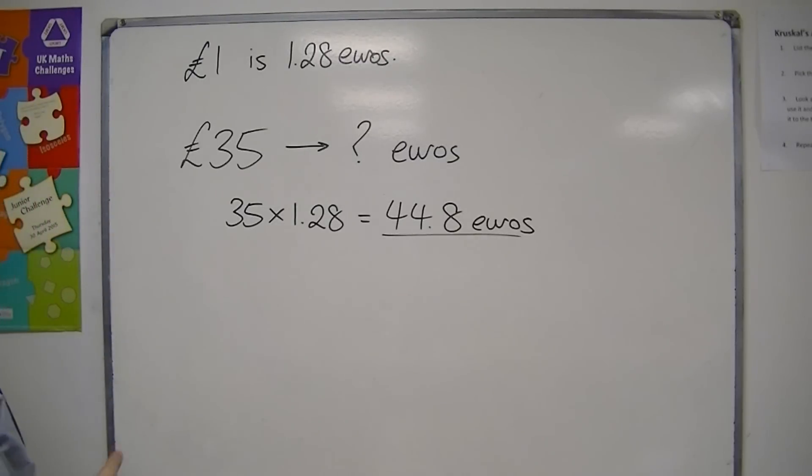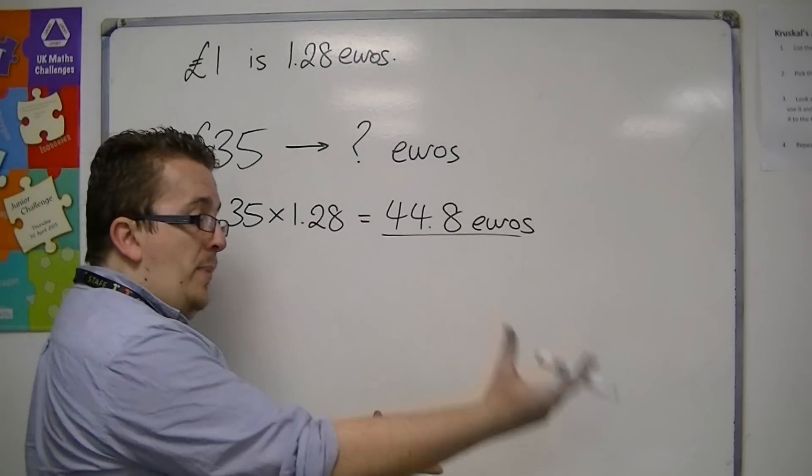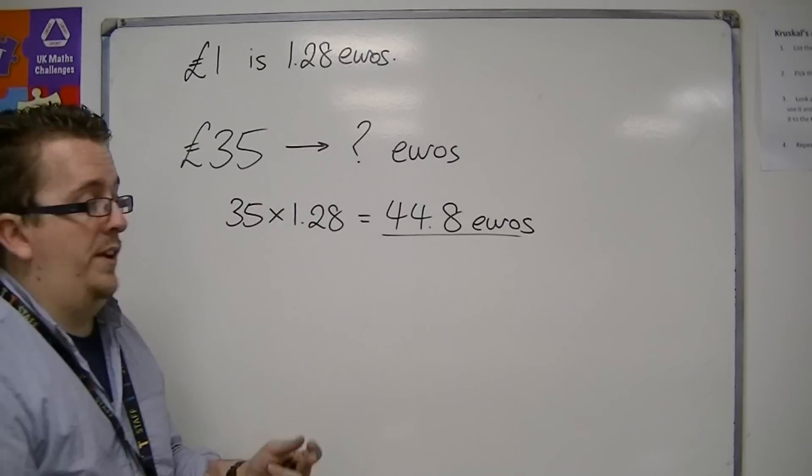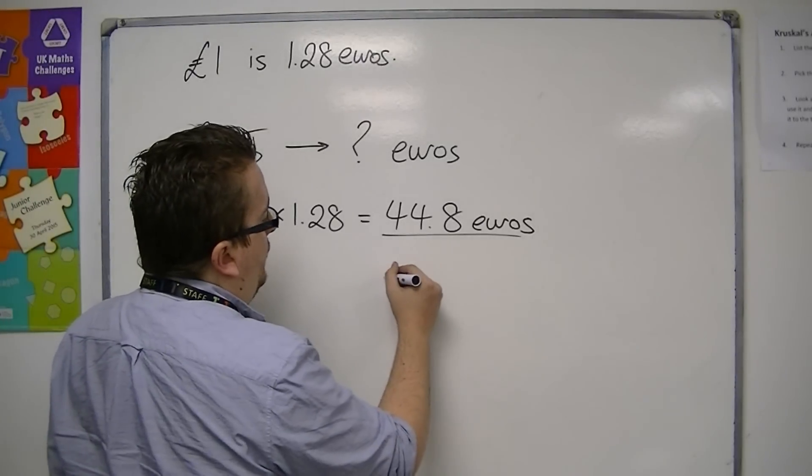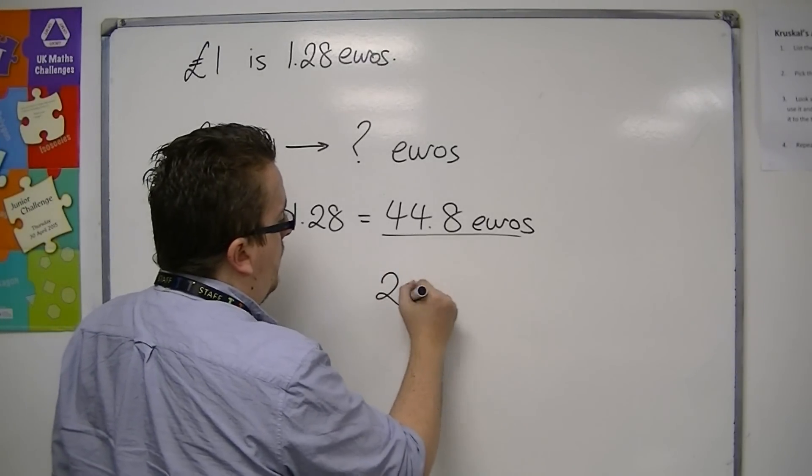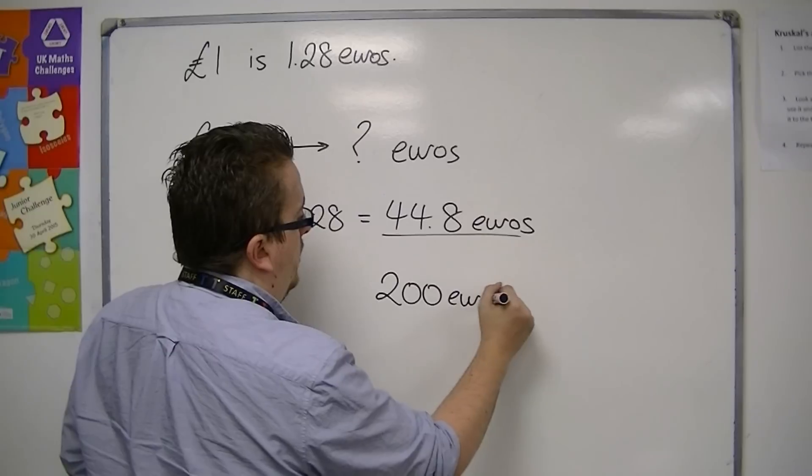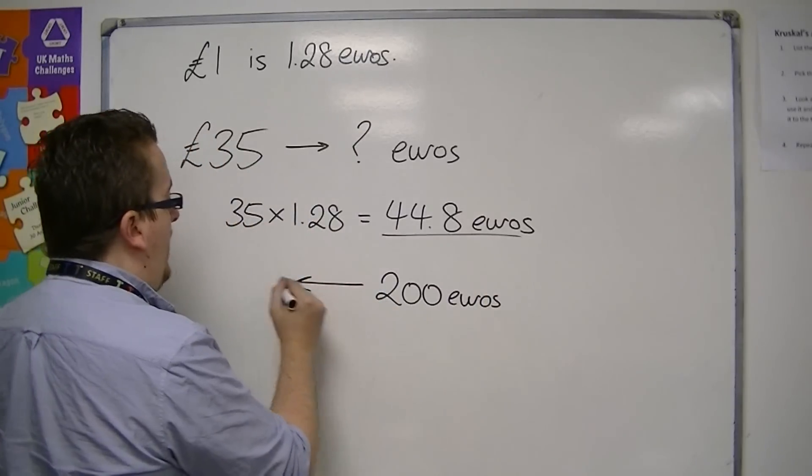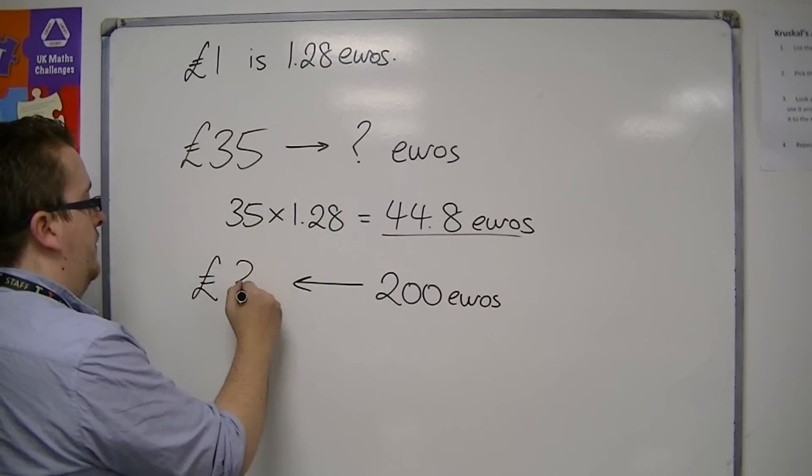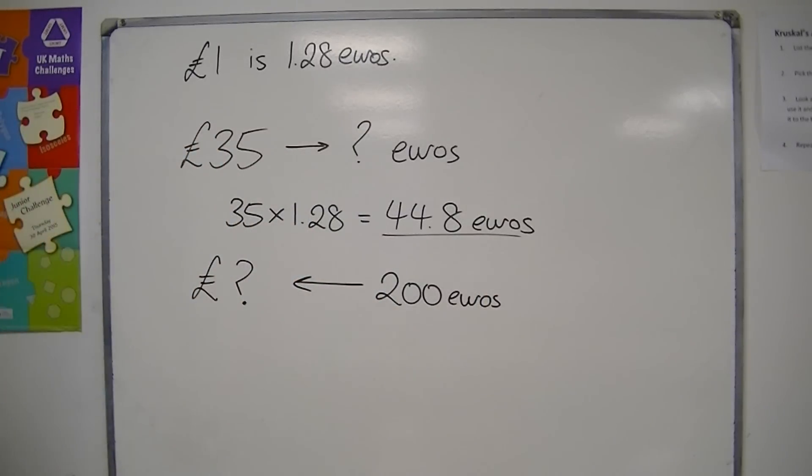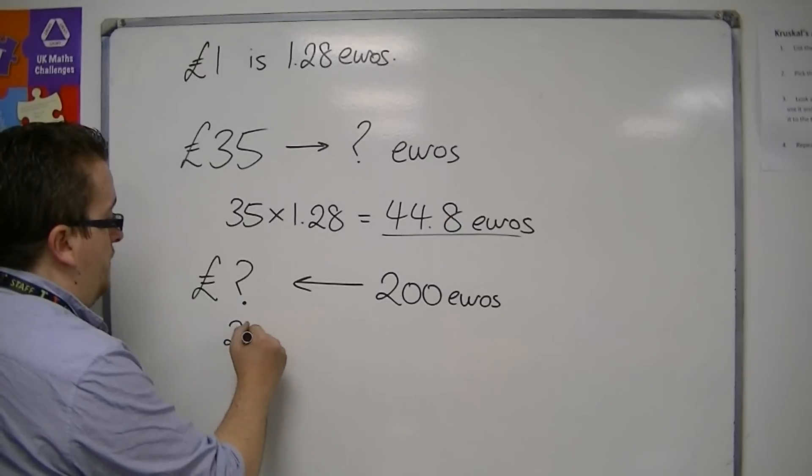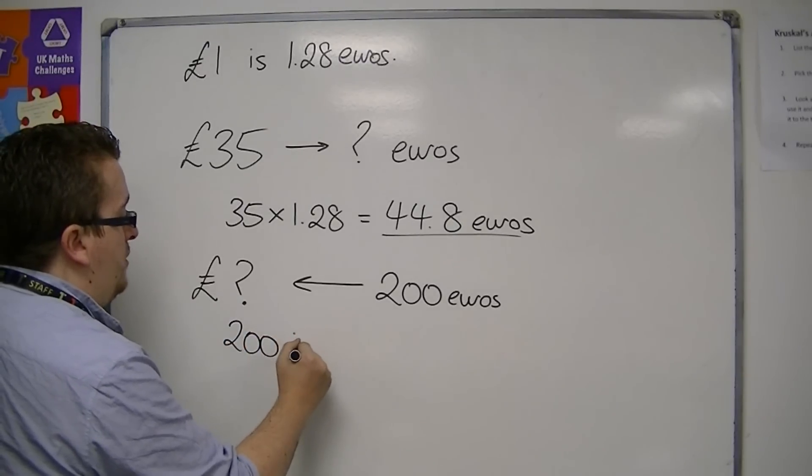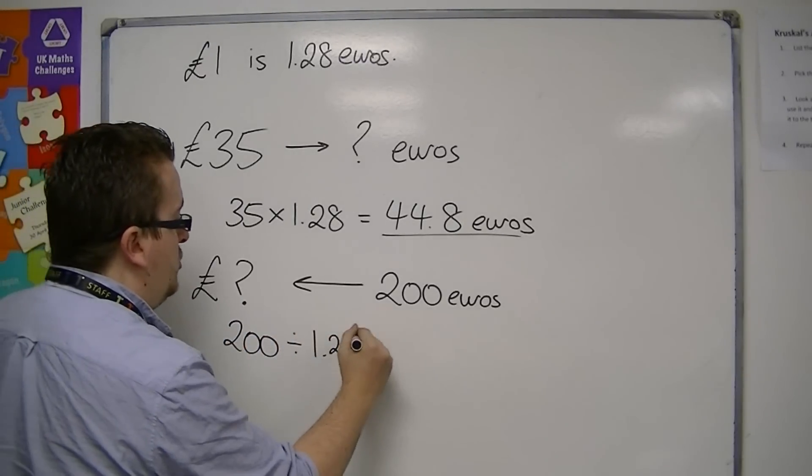Then let's say we want to, we're coming back from our holiday and we have, let's say we've got 200 euros, and we want to transfer this back into pounds. Then for this problem, instead of doing a multiplication, it is a division.